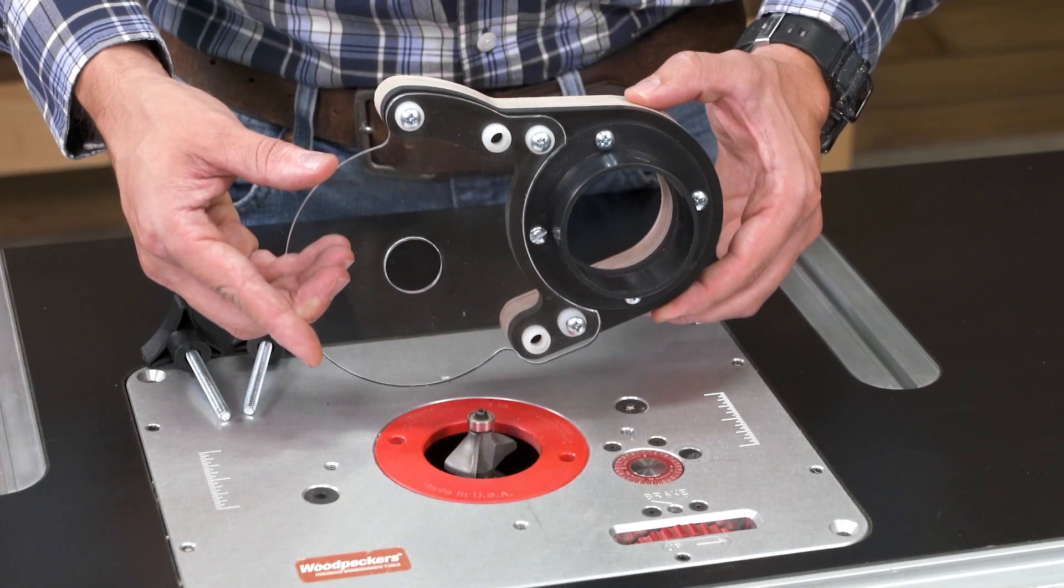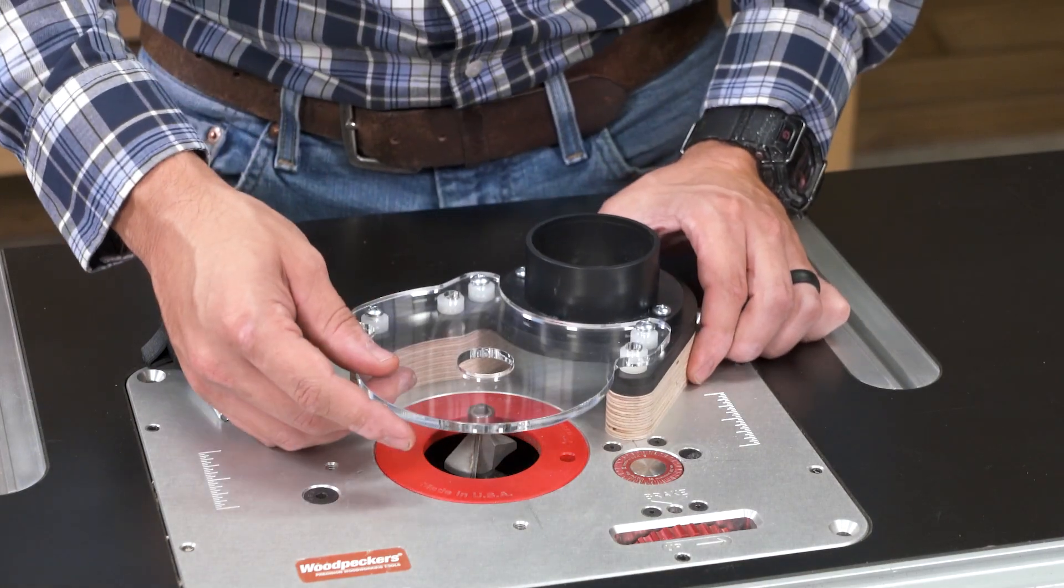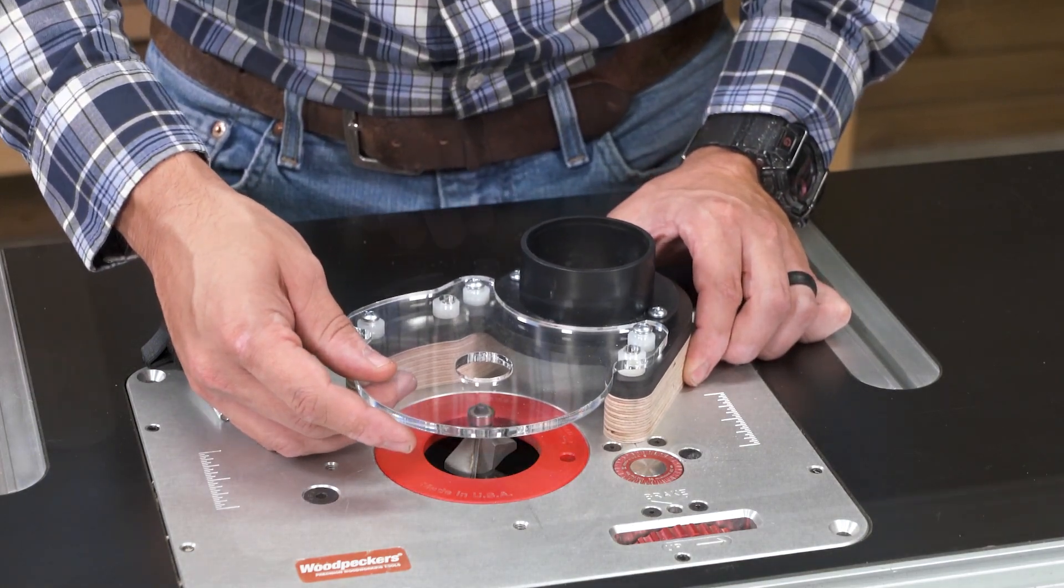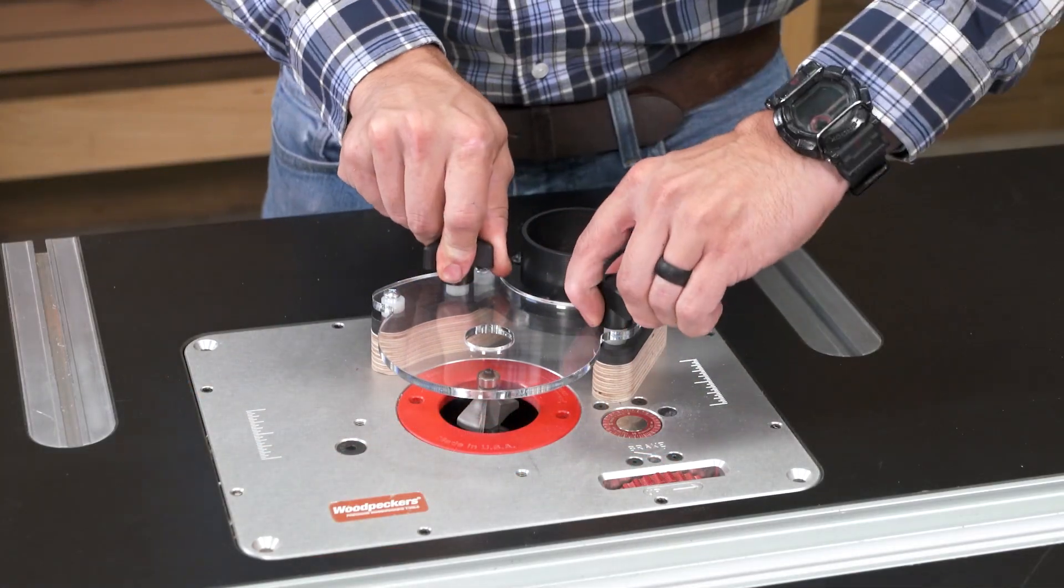The freehand guard attaches to any Woodpecker's router plate in seconds. Simply align the holes with the threaded holes on your router plate, then insert and tighten the two threaded knobs. It's that easy.